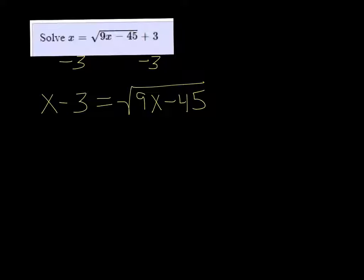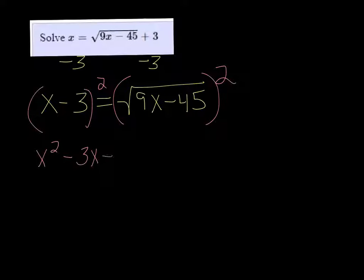Now to remove the radical, we need to square it, because the square of a square root cancels out. And whatever you do to one side, you always do to the other. So if we square the x minus 3, we get x squared minus 3x, minus 3x again, plus 9. And on the right side, we just get what's inside the radical.